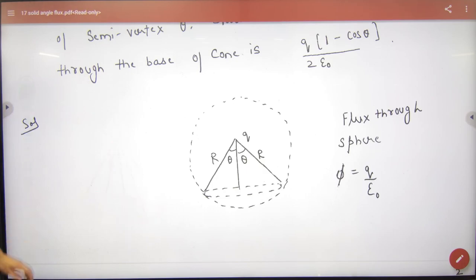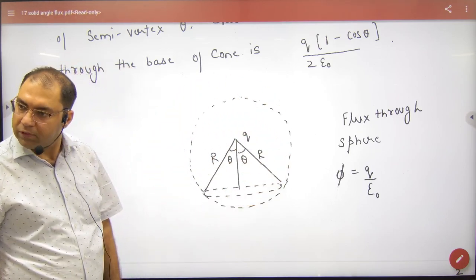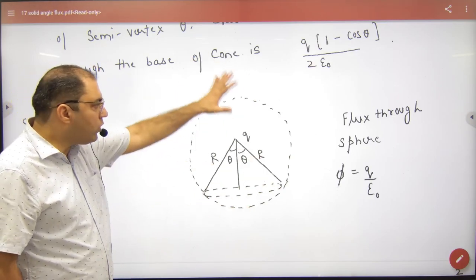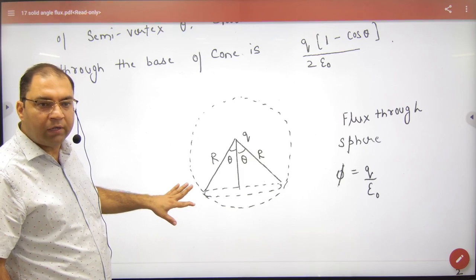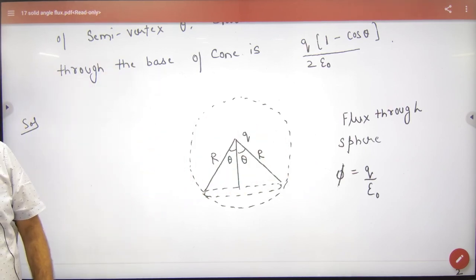What will be the closed body? Make a sphere. Now tell me, if this is a complete sphere, what will be the flux through this entire sphere? It will be Q/ε₀ because there is a closed body.